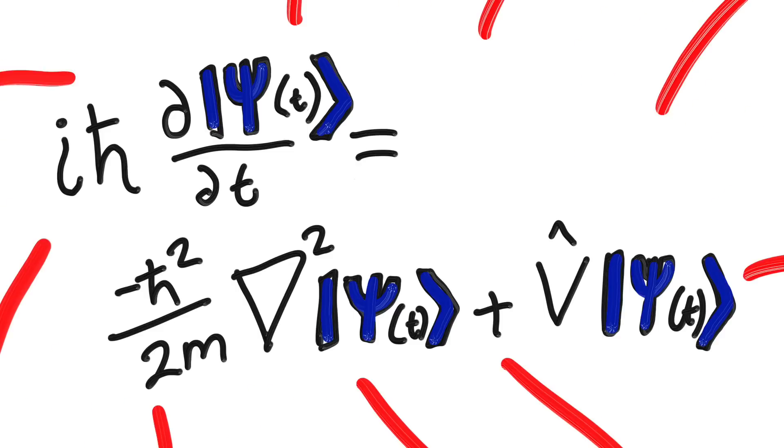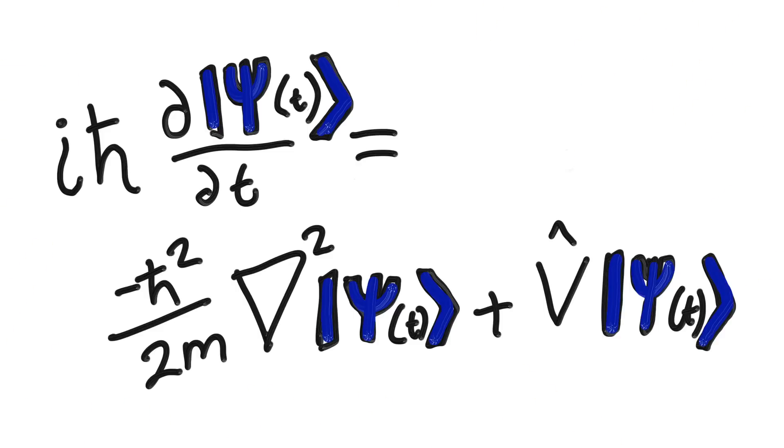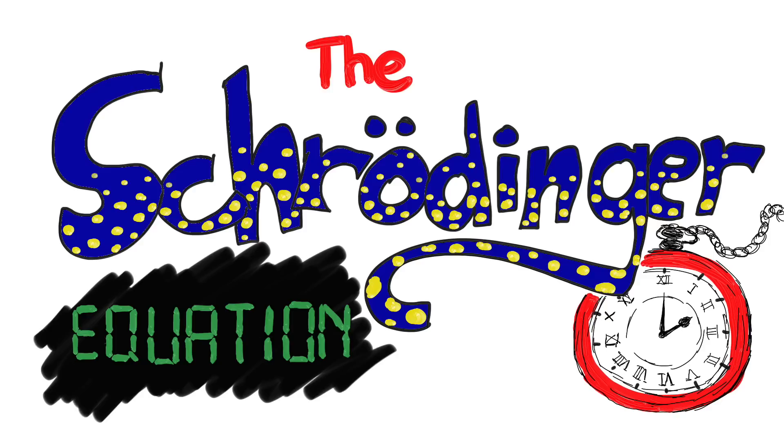This is the Schrödinger equation. I know it looks ugly, but don't run away. I'm going to talk about what the Schrödinger equation actually means, and hopefully you'll see it doesn't deserve its bad reputation.